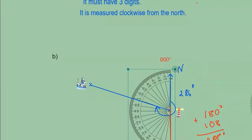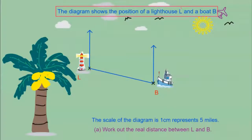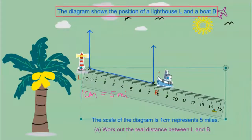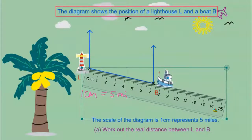The next example shows a diagram with the position of a lighthouse labeled L and a boat labeled B. The scale of the diagram is one centimeter represents five miles, so we write: one centimeter equals five miles in real distance. The question asks us to work out the real distance between L (lighthouse) and B (boat), so we're going to use a ruler to measure the distance between L and B and convert that into miles.